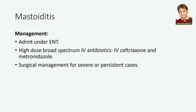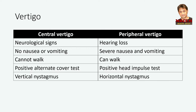Let's move to the topic of vertigo. Vertigo refers to the perception of spinning or rotation of the person or their surroundings in the absence of any actual physical movement. It is important to differentiate between peripheral and central vertigo. The cause of central vertigo is in the CNS, but the cause of peripheral vertigo is in the ear. Central vertigo is associated with neurological signs, but peripheral vertigo may be associated with hearing loss. Central vertigo is not associated with severe nausea and vomiting like peripheral vertigo. The patient with central vertigo cannot walk, but the patient with peripheral vertigo can walk, although may be unsteady. Central vertigo is associated with positive alternate cover test, but peripheral vertigo is associated with positive head impulse test. Central vertigo is associated with vertical nystagmus, but peripheral vertigo is associated with horizontal nystagmus.